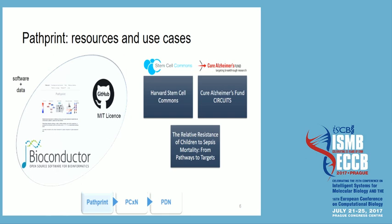Pathprint has been out for four or five years now and has some very interesting use cases. The first is that it was used by the Stem Cell Commons to help in the standardization of how they represent and compare stem cell systems. It's also used in the Circuits Project for the Cure Alzheimer's Fund to help investigate the regulation of genes associated with Alzheimer's. The most recent use case is a sepsis mortality paper that attempts to go from pathways to targets for that specific disease, currently under review.